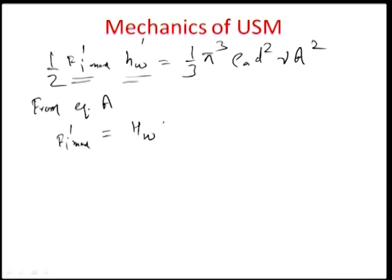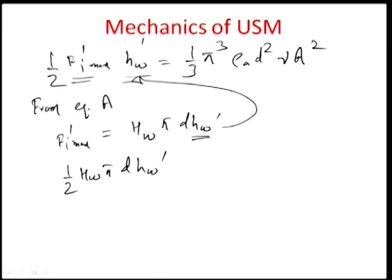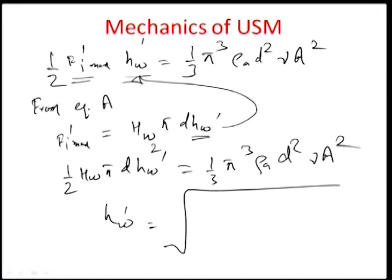From equation A, f_i_dash_max equals sigma_w times pi times d times h_w_dash, where h_w_dash is the maximum indentation depth of a freely flowing abrasive grain. Substituting this into the equation, we get (1/2) sigma_w pi d (h_w_dash)^2 equals the kinetic energy maximum, leading to h_w_dash equals the square root of (2 rho_a / (3 sigma_w pi d)) times nu a.